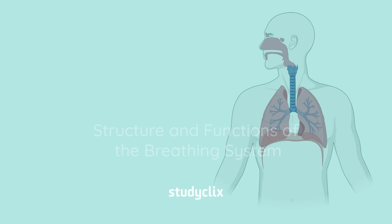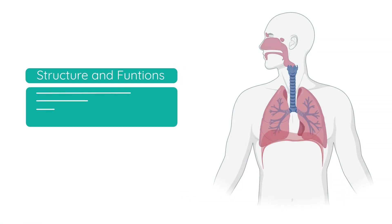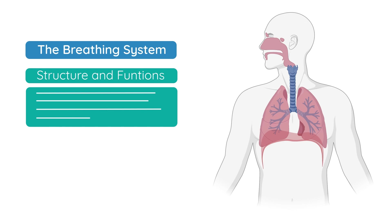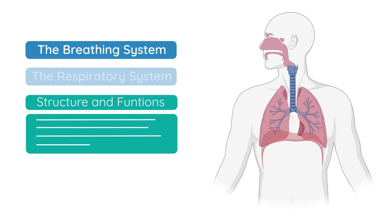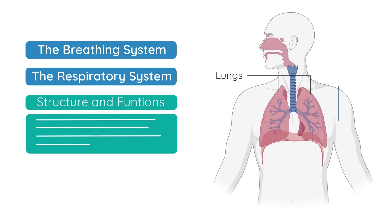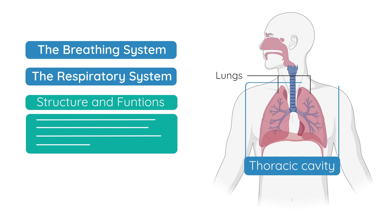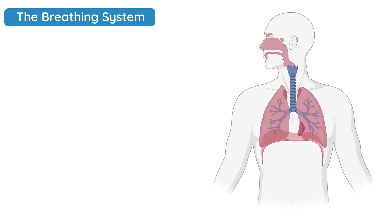In this video we're going to look at the structure and the function of the various parts of the breathing system. Make sure you understand that the breathing system is sometimes known as the respiratory system. The main organs involved are the lungs, found within what we call the thoracic cavity. You need to be able to draw this whole structure, but on an exam you're more likely to be asked to name the different parts and give the function of those parts.